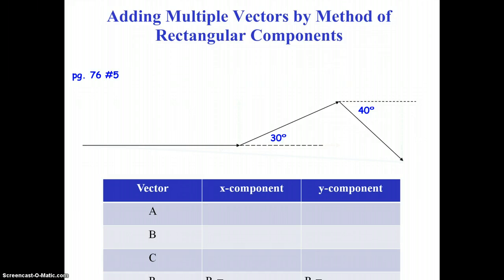In this video we're going to take a practice problem from your AP book. Turn to page 76, number 5. It says a roller coaster moves 200 feet horizontally, then rises 135 feet at an angle of 30 degrees above the horizontal, then travels 135 feet at an angle of 40 degrees below the horizontal.